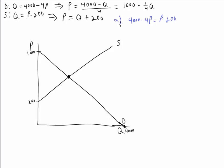And we can then solve for the equilibrium price, and I could just add 4P to both sides, add 200 to both sides, and I get 4200 equals 5P, divide both sides by 5, now P equals 840. So my equilibrium price here is 840. And I know that my quantity is P minus 200, so my quantity is 840 minus 200, which is 640.